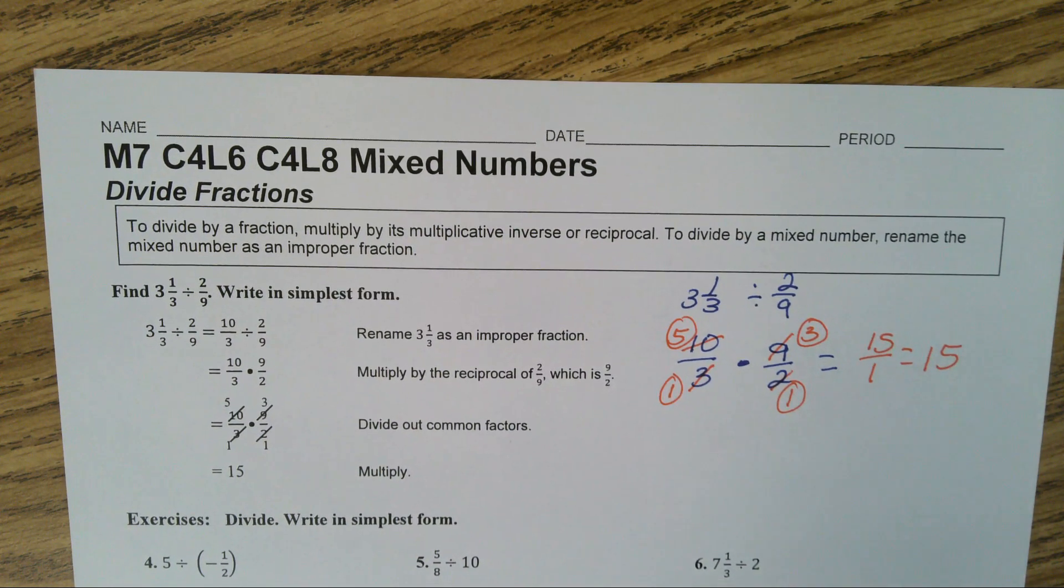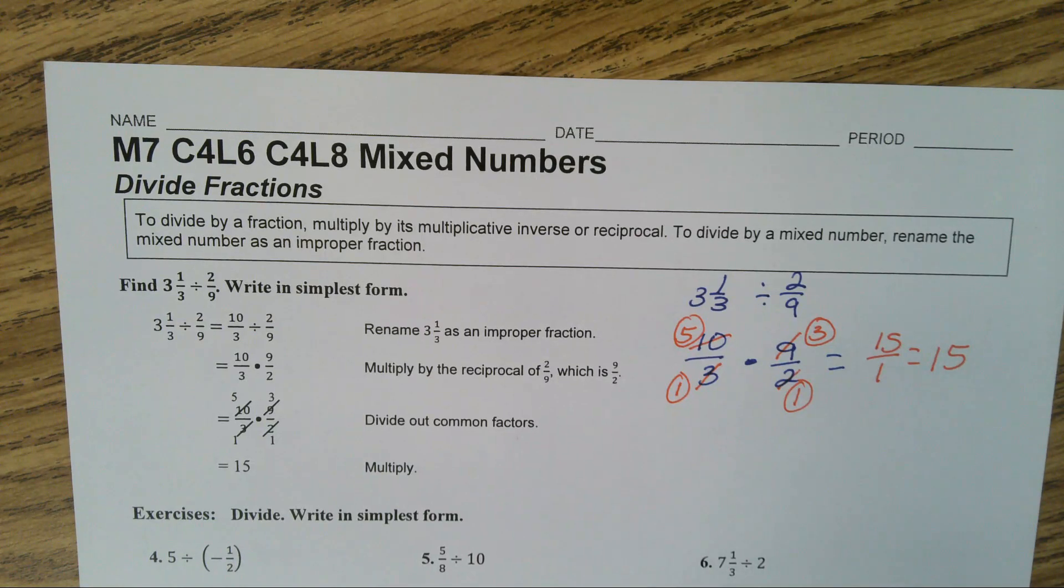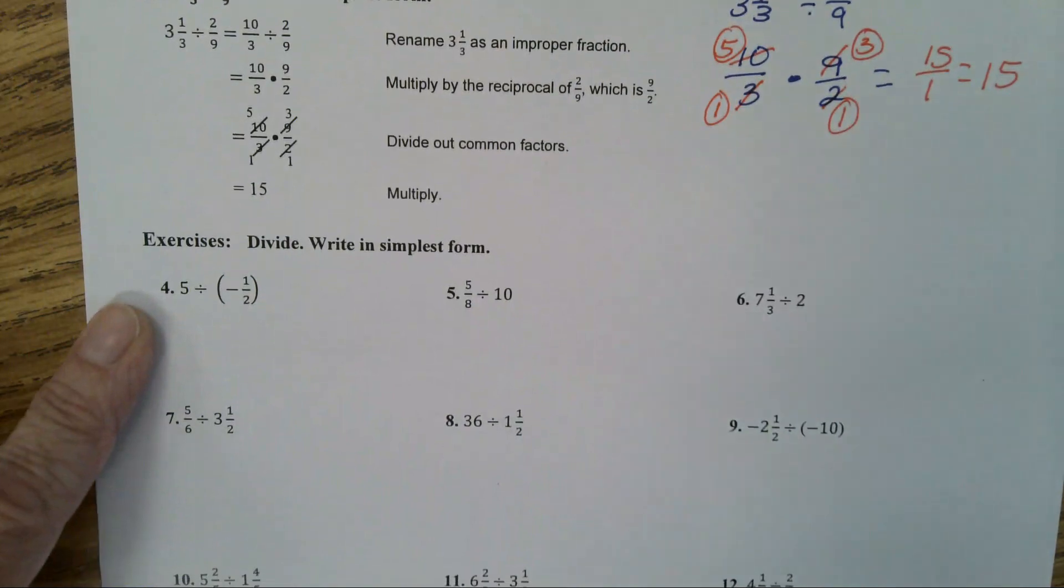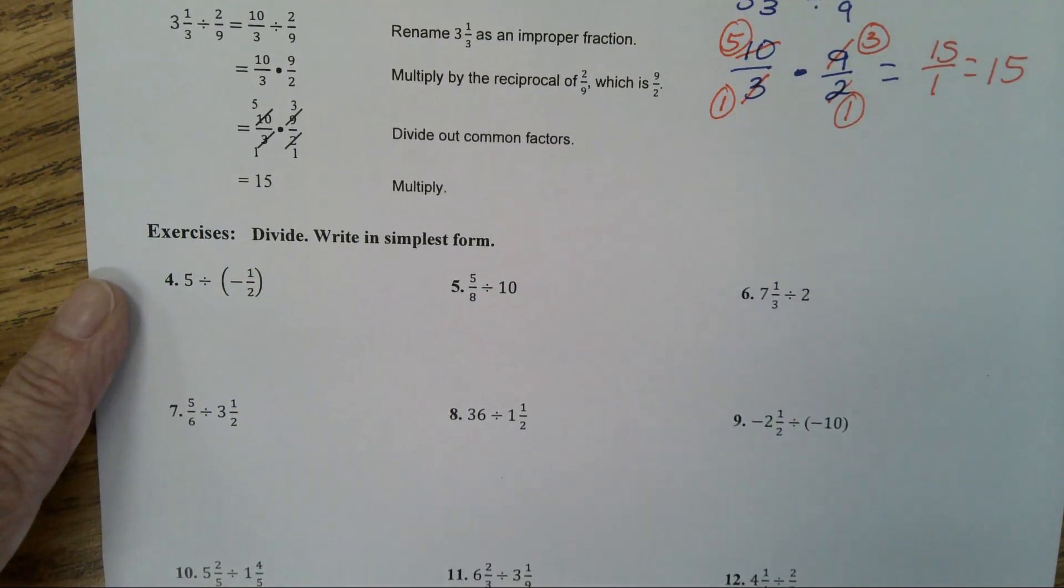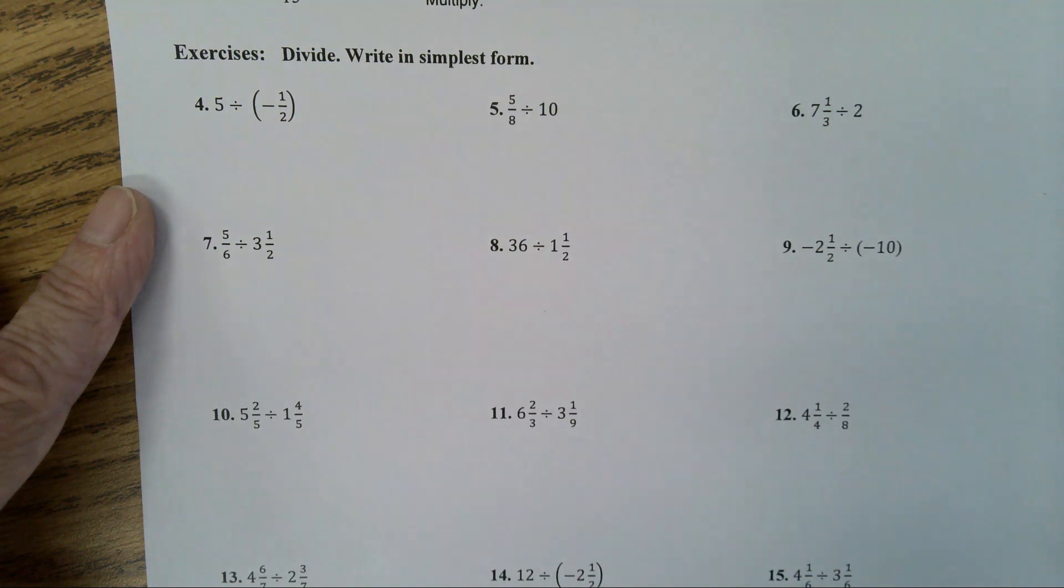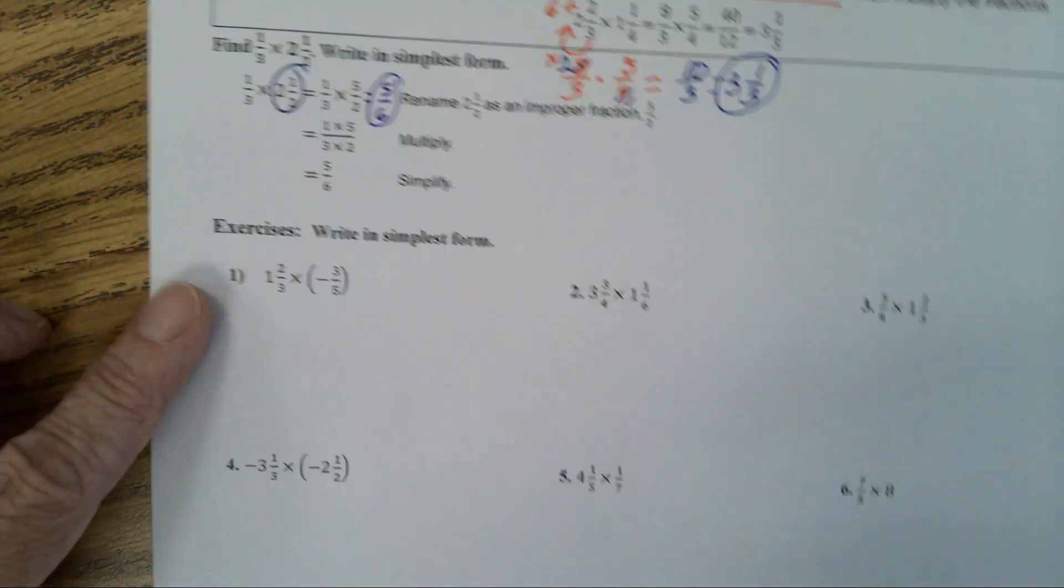Now, for class work, we are going to do the problems. It starts at number 4. So there really are not 15 on this one. I cut off the first line because they weren't mixed numbers. And then I gave you space on these. So you are going to do 4 to 15, all of these. And then on the multiplication side, there are 8, 1 to 8.